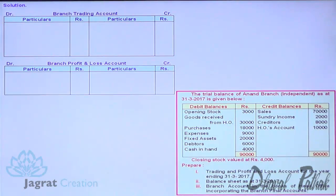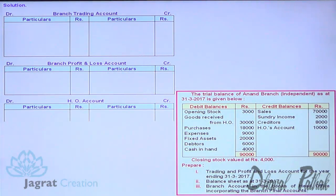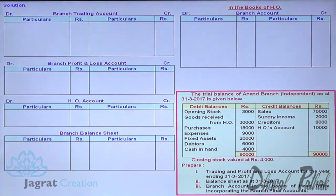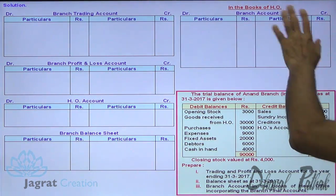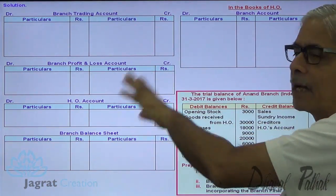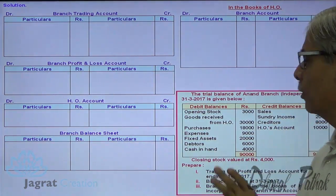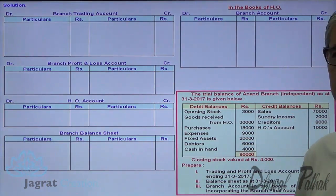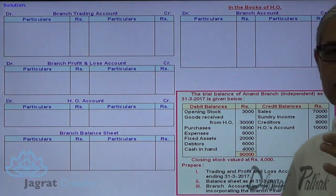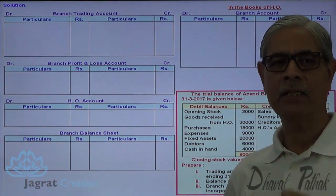This is my trading account and profit and loss account. HO account means balance sheet. First adjustment: closing stock. The branch account is prepared in the books of HO. This is the branch trading profit and loss account prepared from the given trial balance and adjustment. I am going to give the effect of adjustment entries or absorption entries at a later stage.